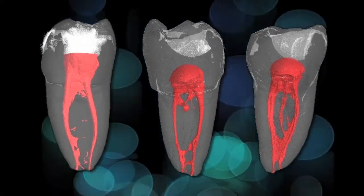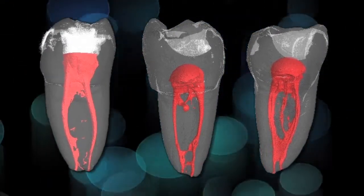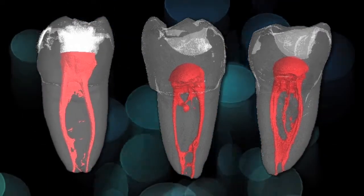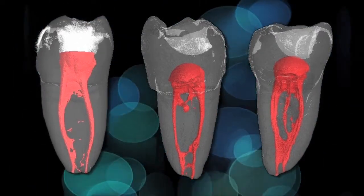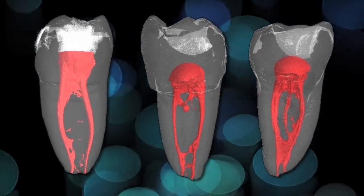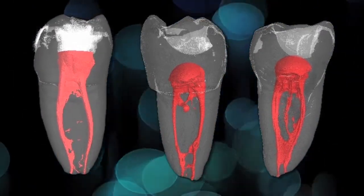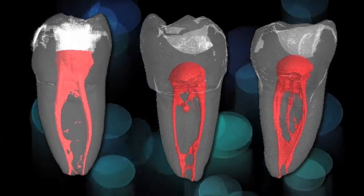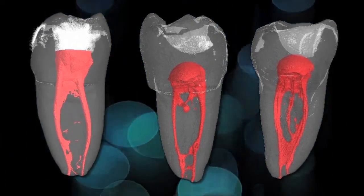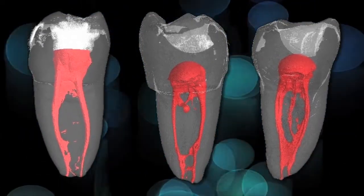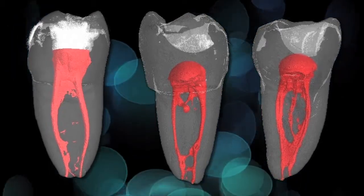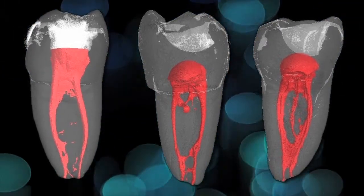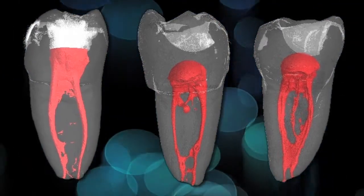allowing three-dimensional microscopic viewing of an extracted tooth with a voxel size of about 7 microns. It is important for you to know that a clinical CBCT device will have a voxel size of about 80 microns.